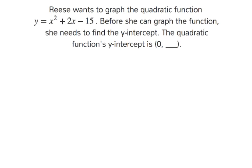Ries wants to graph the quadratic function y equals x squared plus 2x minus 15. Before she can graph the function, she needs to find the y-intercept. The quadratic function's y-intercept is 0, blank.